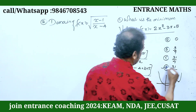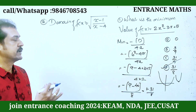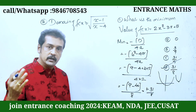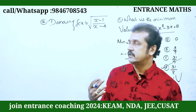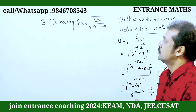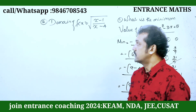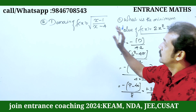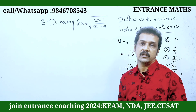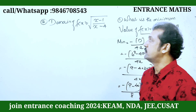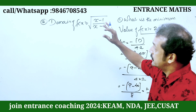Okay. Minimum value is very easy. Next: domain of f(x) is equal to root of (x minus 1) divided by (x minus 4).